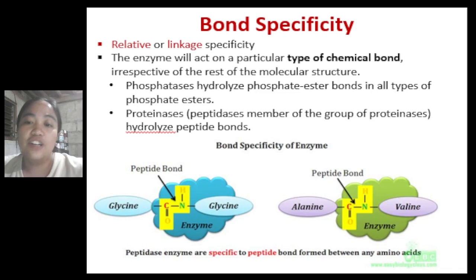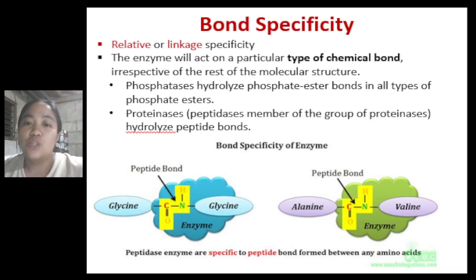Another example of bond specificity is peptidases, which are members of the group of proteinases or proteases. These peptidases will hydrolyze any peptide bond, regardless of the surrounding molecular structure, acting solely based on the type of chemical bond present.